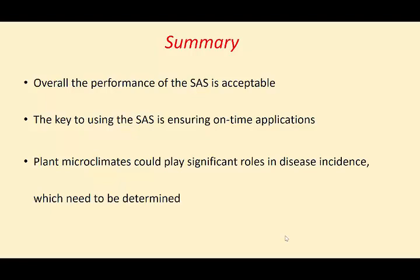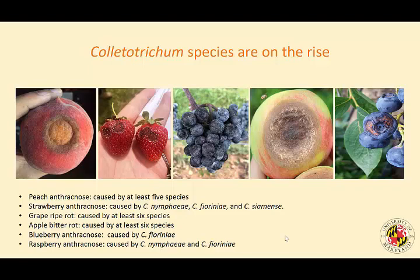Moving on to Colletotrichum: Colletotrichum species have been on the rise and cause issues on different fruit crops — peach anthracnose, strawberry anthracnose, ripe rot on grapes, bitter rot on apples, and anthracnose on blueberries. These are caused by species within the same genus. Typically, there are multiple Colletotrichum species involved in one crop; for example, at least three different species cause strawberry anthracnose.